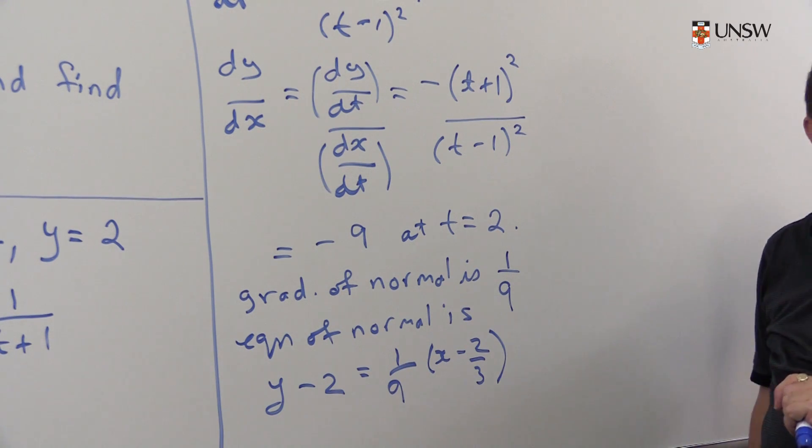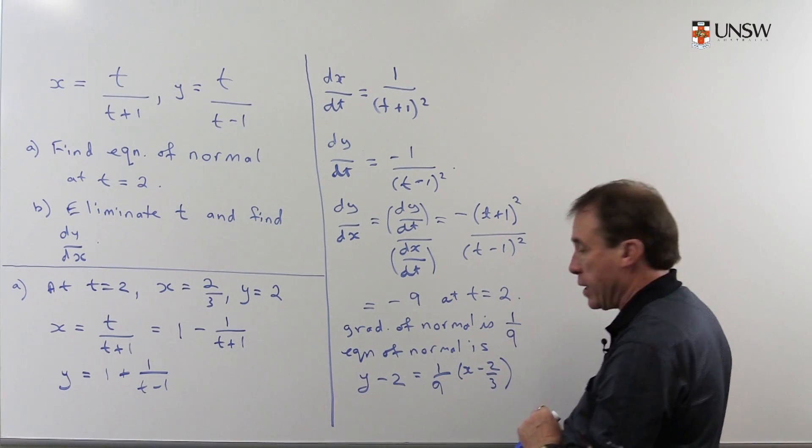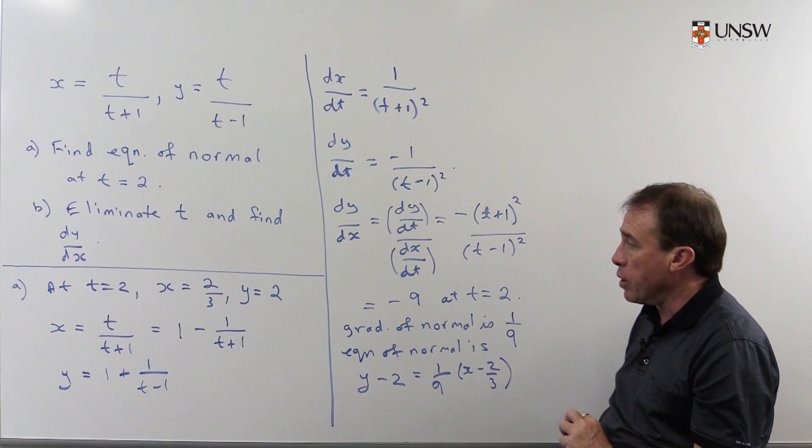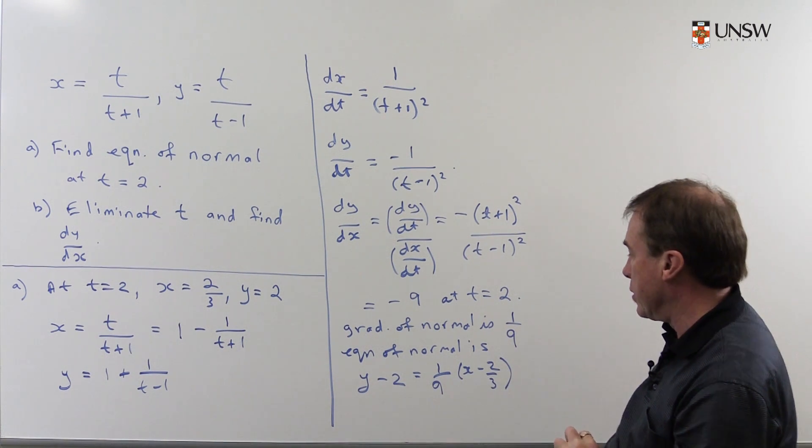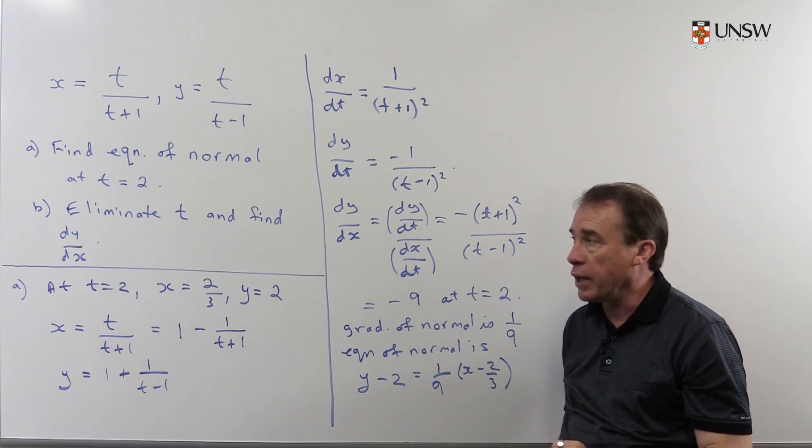And I can tidy that equation up and you can multiply through by 27 and rearrange. But I think I'm just going to leave that as it is at the moment. You can rearrange that later yourself.